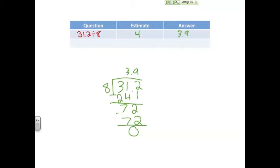They are reasonable because 3.9 is only one digit away from our estimate, which is 4.